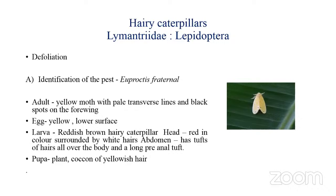The fully grown larva of Euproctis fraterna has a red head with white hairs around it and a long pre-anal tuft. It pupates on the plant itself in a cocoon of yellowish hair.